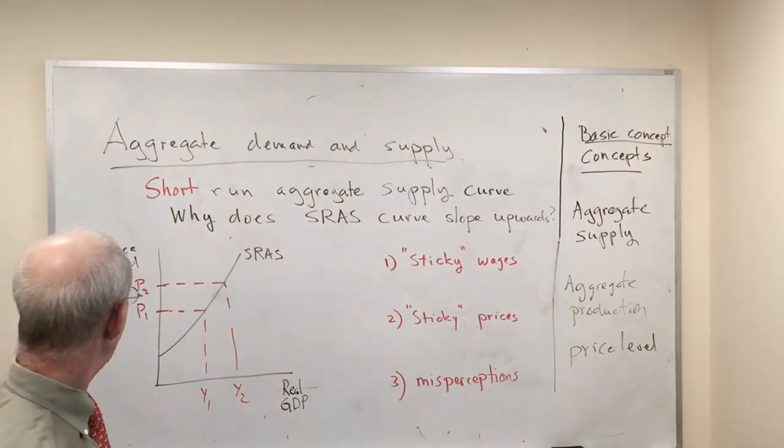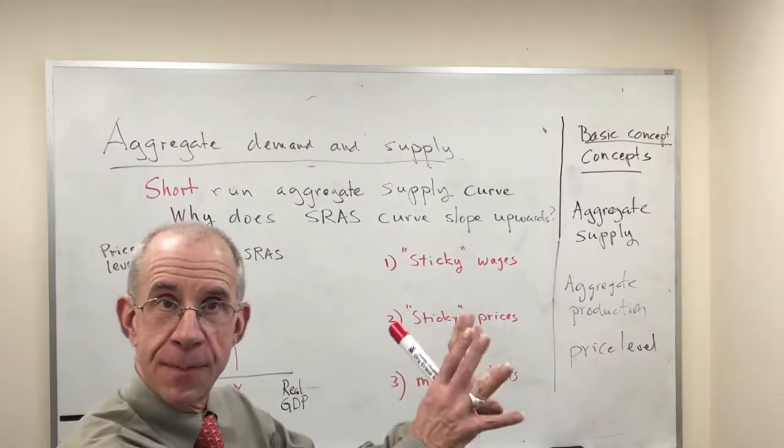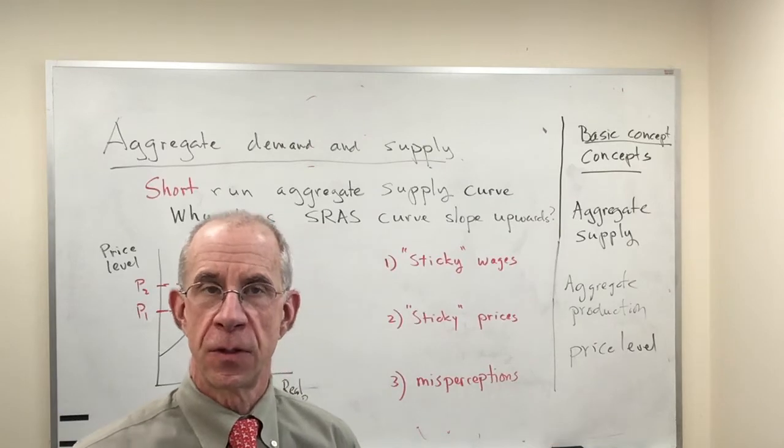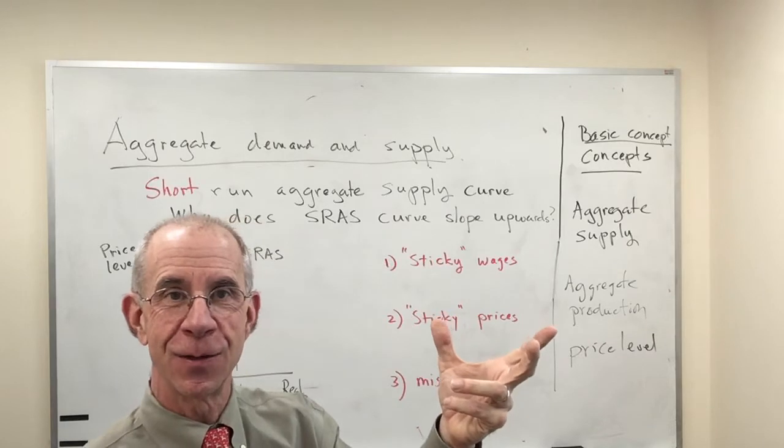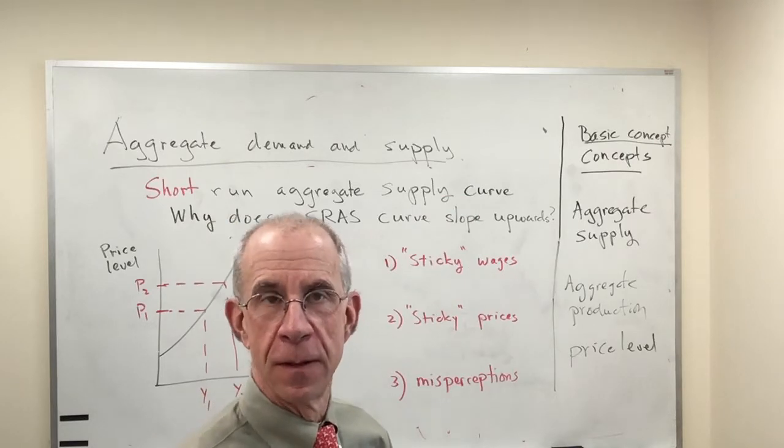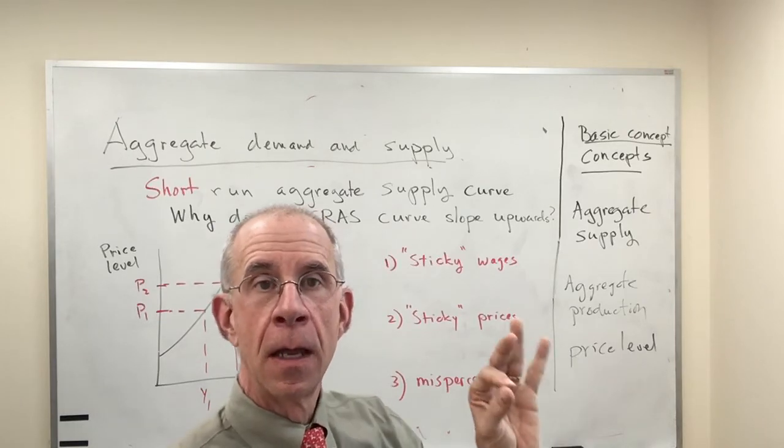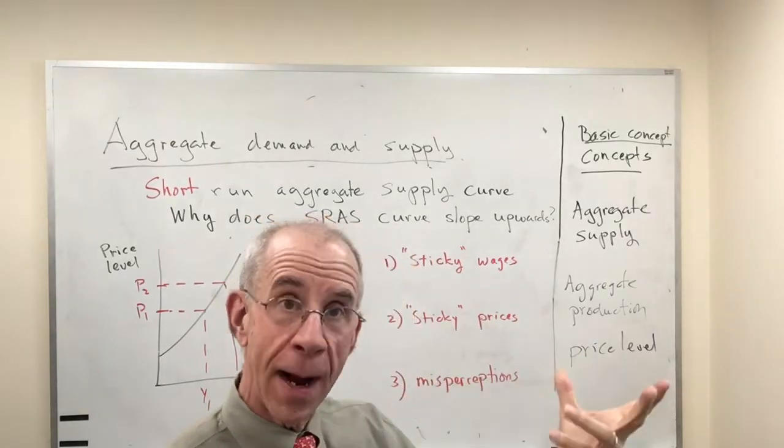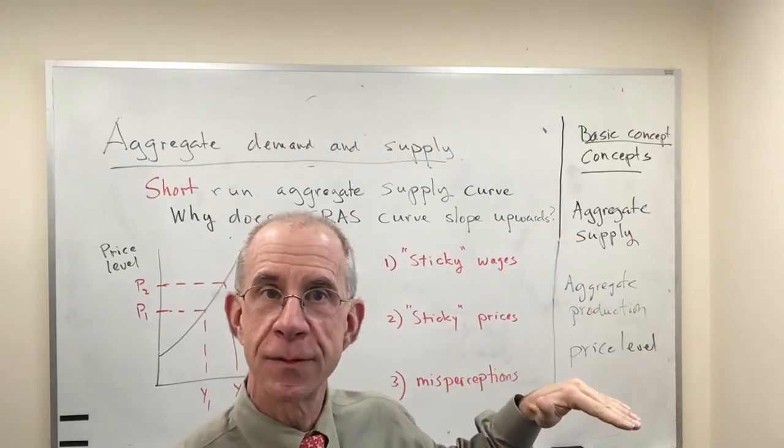We'll start out with this initial level of prices in the economy and a level of output. And then we have an increase in the overall price level, but keeping some of the wages constant in some sectors. So what does this do to the companies that are employing those workers where they don't have to change their wage and the prices of the goods that they sell go up? Well, it's a pretty nice deal for the firm. They get higher prices, but they don't have to pay more for the workers.